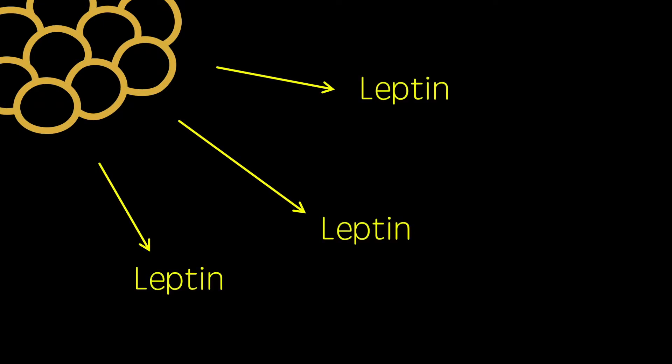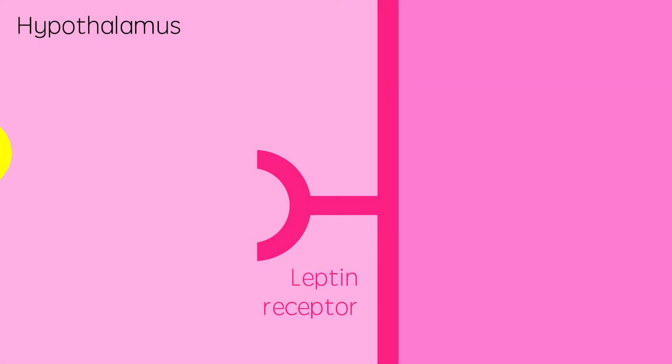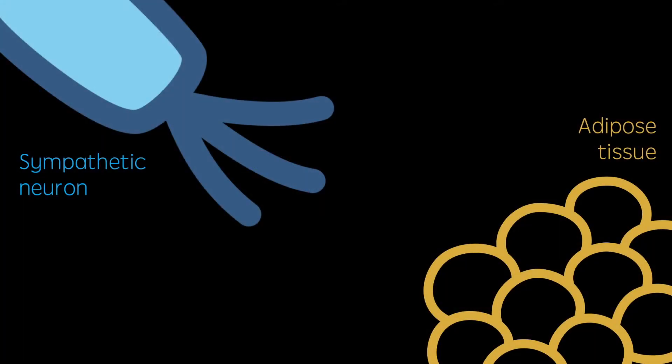Leptin is a hormone released from adipose tissue which acts on the hypothalamus, which sends signals back to the adipose tissue, regulating its mass as well as reducing appetite. The higher the fat content, the higher the blood leptin concentration, which acts to decrease adipose mass and appetite.